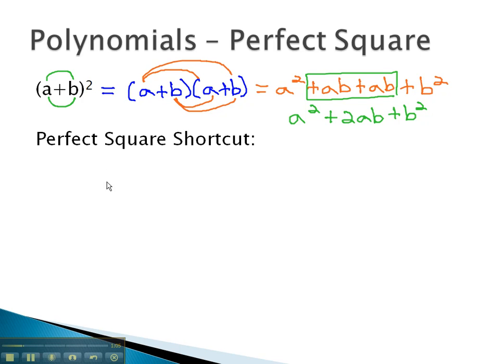This gives rise to our perfect square shortcut. If we have a plus b squared, we can multiply them together by squaring the first term, and then taking the product ab twice. ab and ab is 2ab. And finally, we can square the last term to get b squared.